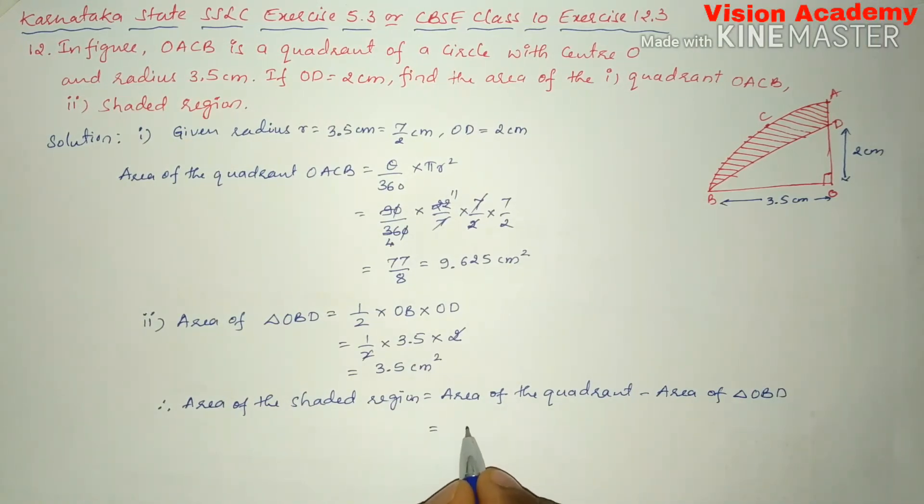Here, area of quadrant is 9.625 minus area of triangle OBD is 3.5. So this results in 6.125 cm squared.